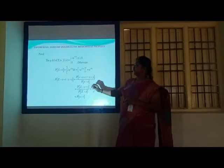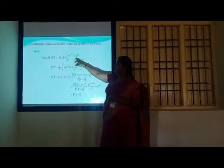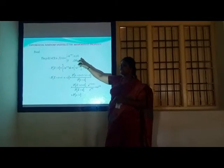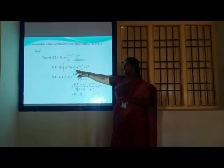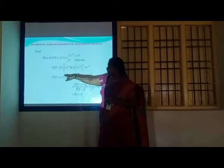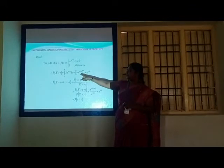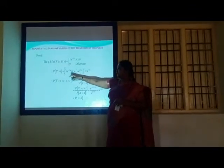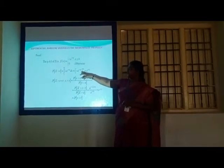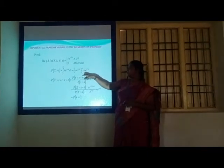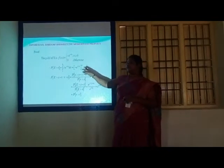Derivation: the PDF of X is f(x) = λe^(−λx) for x ≥ 0. The probability P(X > t) equals the integral from t to infinity of λe^(−λx) dx. Since λ is constant, integrating with respect to x gives e^(−λt).